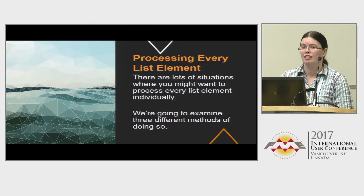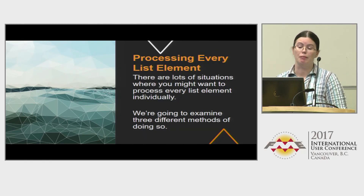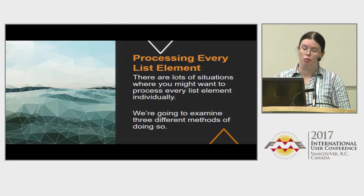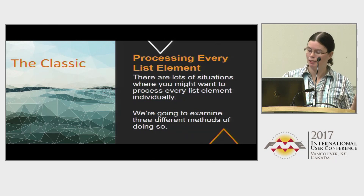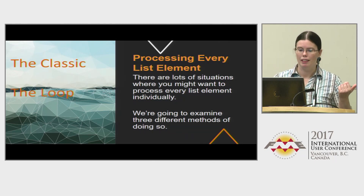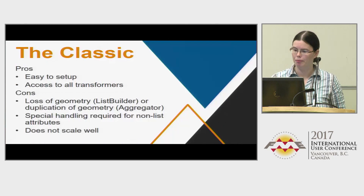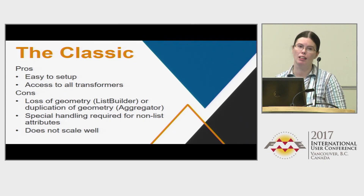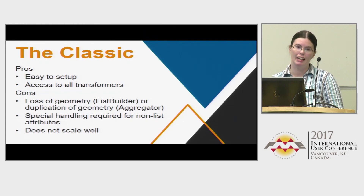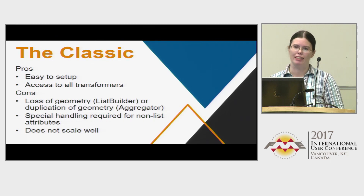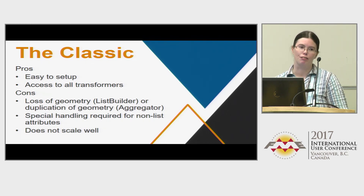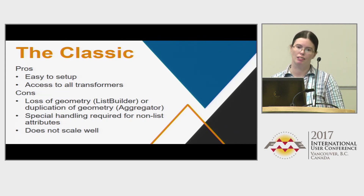There are lots of situations where you want to process every element in a list individually, so we're going to look at three methods: the classic, the loop, and the Python method. The classic method is easy to set up and you have access to all of the transformers in FME. The bad news is that you either lose the geometry or duplicate the geometry, there's some special handling required for non-list attributes, and it doesn't scale super well — when you're dealing with hundreds of thousands of features or list elements, it gets fairly slow.